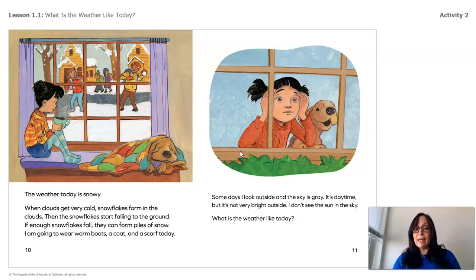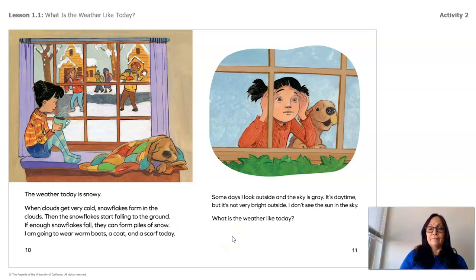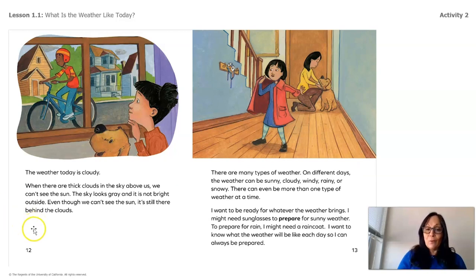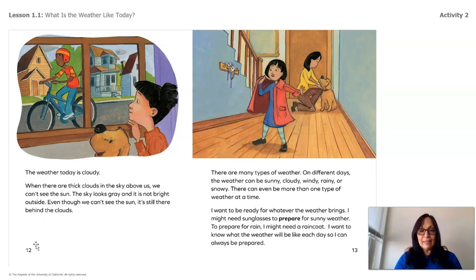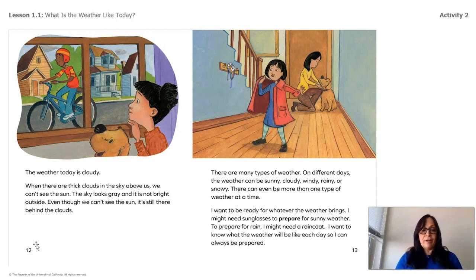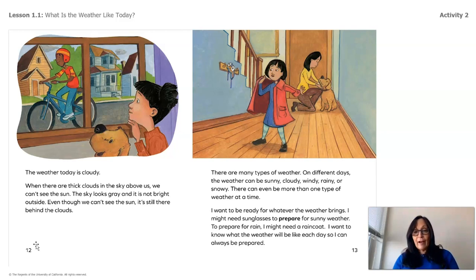Some days I look outside and the sky is gray. It's daytime, but it's not very bright outside and I don't see the sun. The weather today is cloudy! When there are thick clouds in the sky above us, we can't see the sun — the sky looks gray and it is not bright. Even though we can't see the sun, it's still there behind the clouds. There are many types of weather: sunny, cloudy, windy, raining, or snowy. There can even be more than one type of weather at a time.